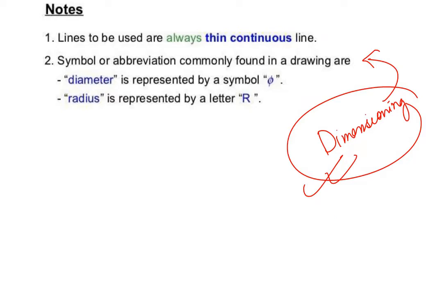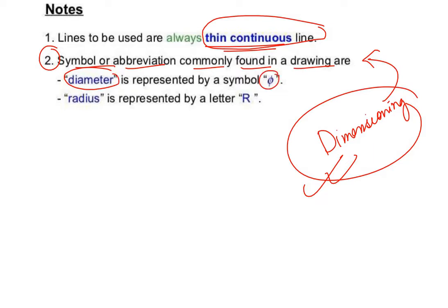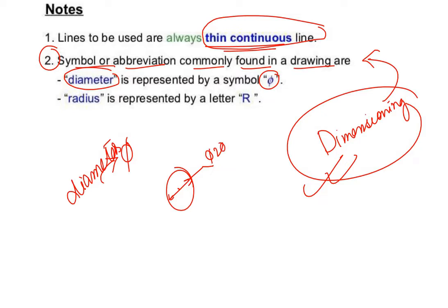Lines to be used are always thin continuous lines, so all should be thin continuous. The second point: symbols or abbreviations commonly found in drawings. You can use a symbol for diameter — I will tell you how the diameter symbol is made and show you the diameter of 10 mm.